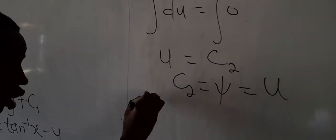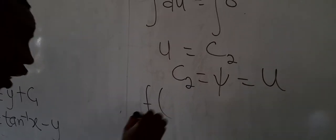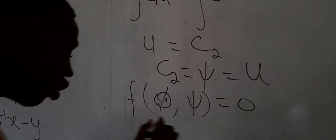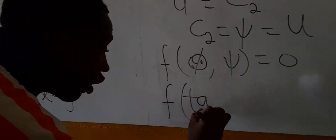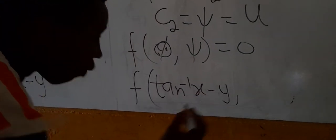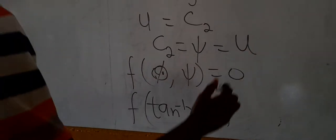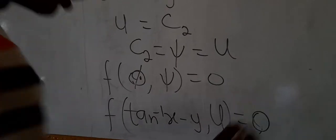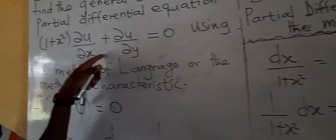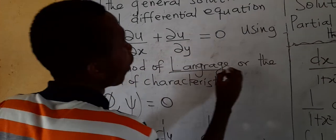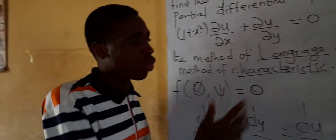So our general solution, which is a function φ(π, φ) = 0, becomes: φ(tan⁻¹(x) − y, u) = 0. This is the general solution to this partial differential equation using the method of Lagrange, or the method of characteristics. I hope you understand this — play over the video and you'll get a good concept.